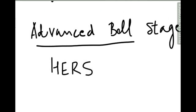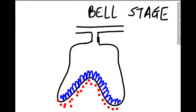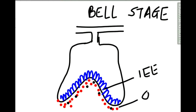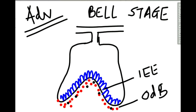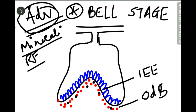Today we'll study Hertwig's epithelial root sheath, but before that we will study about the advanced bell stage. In the bell stage, the inner enamel epithelial cells cause the peripheral cells of the dental papilla to differentiate into odontoblasts. The advanced bell stage is very important because the mineralization of the tooth and the root formation begins in this stage.